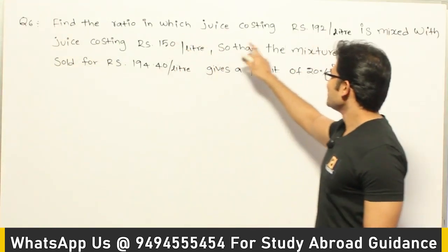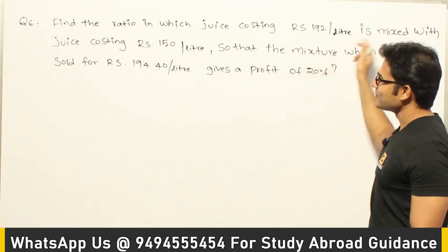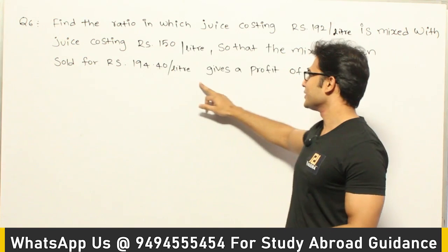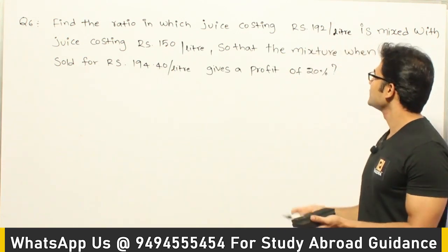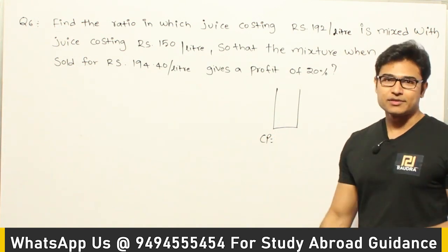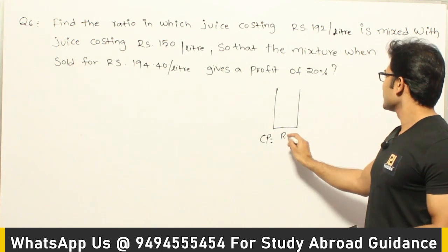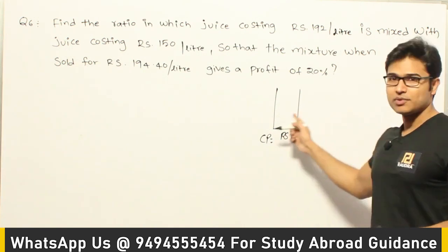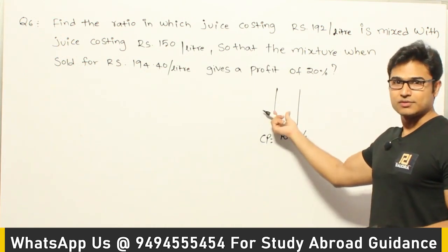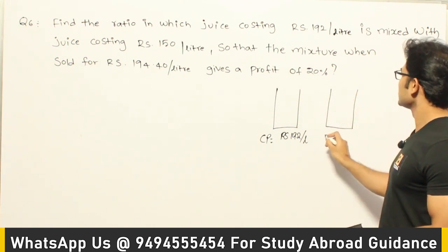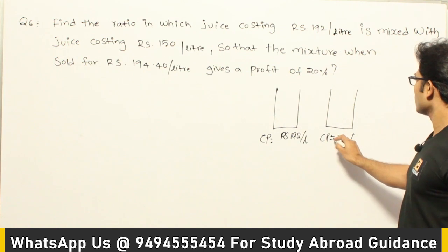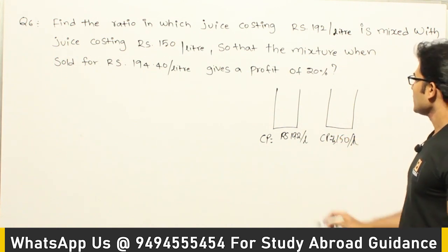Find the ratio in which juice costing 192 rupees per litre is mixed with juice costing 150 rupees per litre, so that the mixture when sold at 194.4 rupees per litre gives a profit of 20%. We are talking about profit and loss here. The cost price of one juice is 192 rupees per litre and the cost price of the other juice is 150 rupees per litre.